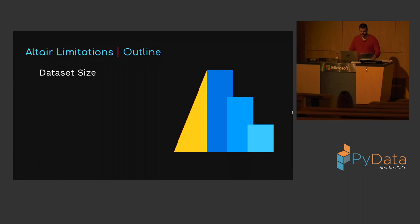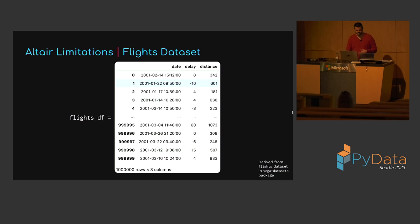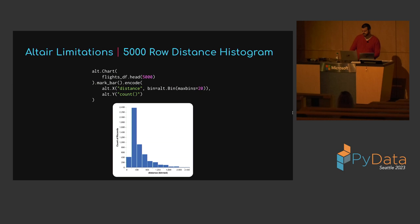I hope I gave you a quick taste of why Altair is a great choice for exploratory visualization, but on its own it has some significant limitations. We're going to look at the limit that stock Altair places on dataset size, talk about how it's not possible to access the transformed data in Python, and look at a workaround mentioned in the Altair documentation and explain why it's not a fully satisfactory solution. This section includes examples referencing a 1 million row flights dataset named flights_df, with columns for flight date and time, minutes delayed, and distance in miles.